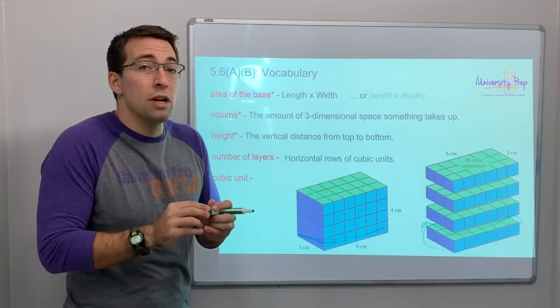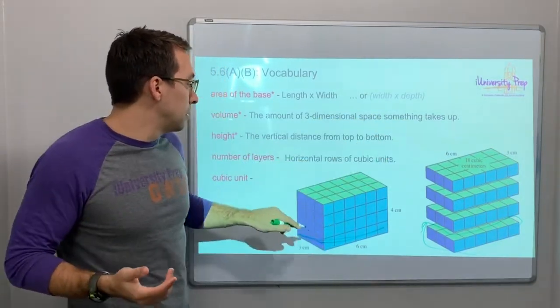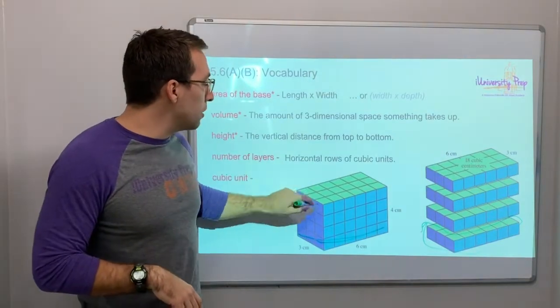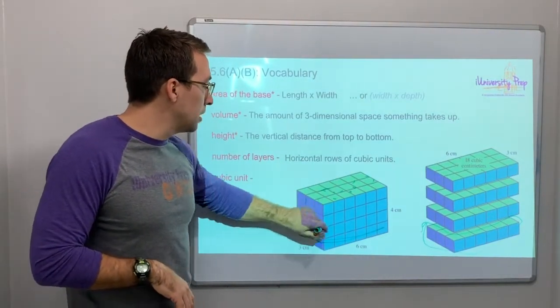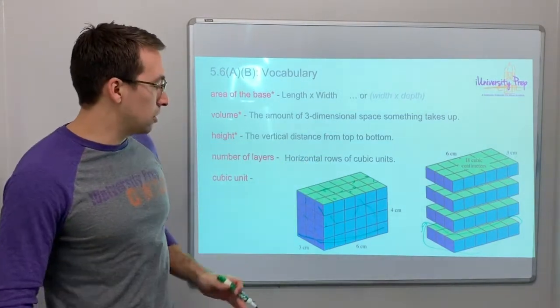Volume is the amount of a three-dimensional space as something takes up. So the volume is all of these different cubes, cubic units, that is in this rectangular prism.